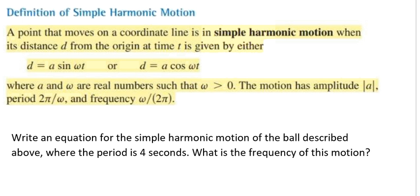So the definition of simple harmonic motion is a point that moves on a coordinate line when its distance d from the origin at the time t is given either by d equals a times the sine of ωt or d equals a times the cosine of ωt, where a and ω are real numbers such that ω is greater than 0. And the motion has an amplitude of the absolute value of a.